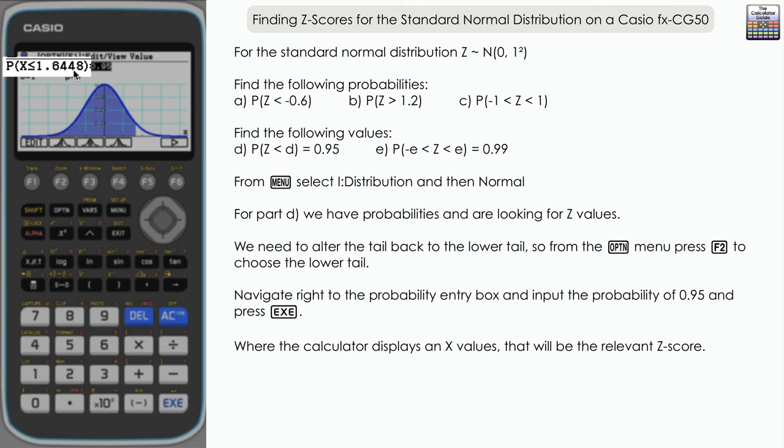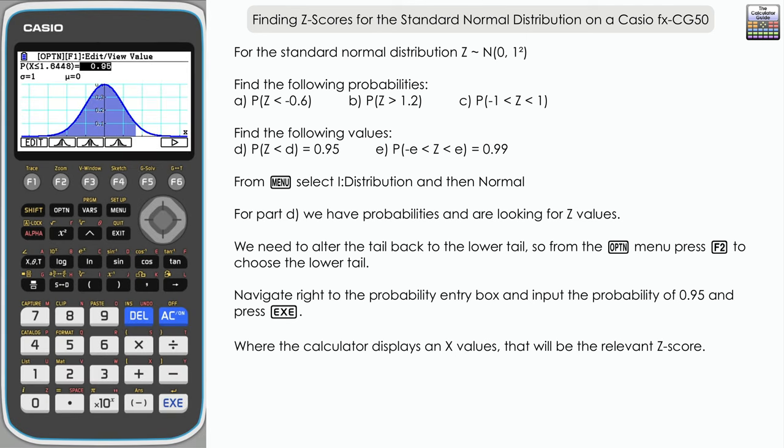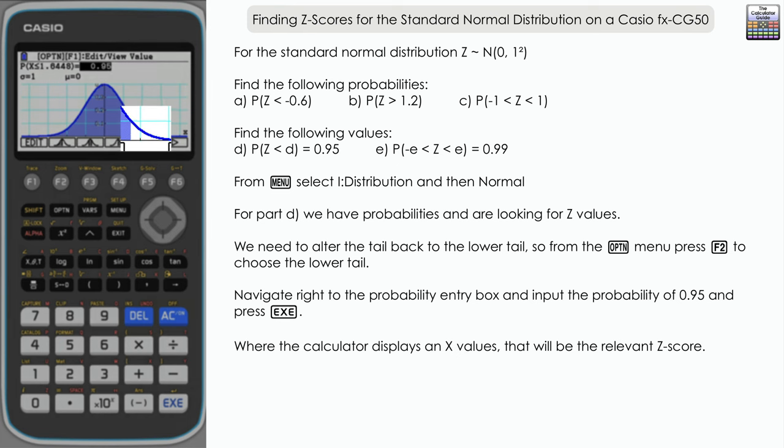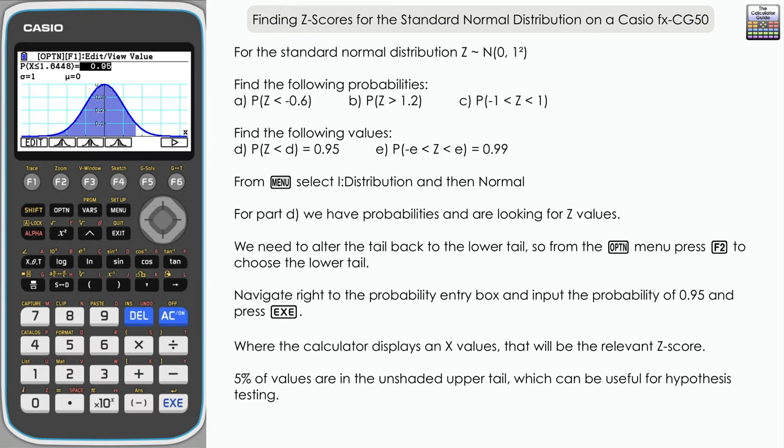And you can see that where the calculator has the X value, that's going to be the Z value that's relevant for part D. So 1.6448. So you know that 95% of values are below that Z-score of 1.6448, and of course, therefore, 5% are in the unshaded upper tail region there. And this sort of information can be very useful if you need that for some sort of hypothesis test where you're looking for a Z-score to test against a critical value.